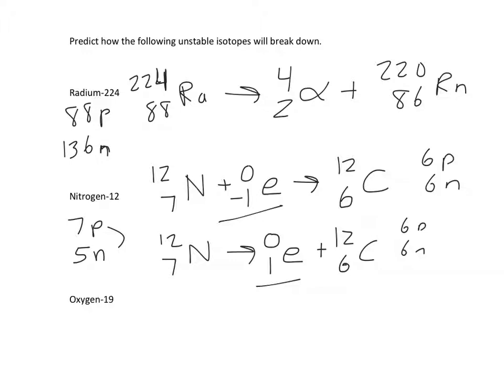All right, this next one, oxygen-19. Oxygen has 8 protons. And if it's got a mass of 19, it has 11 neutrons. So we have too many neutrons here. We would like to turn one of them into a proton.